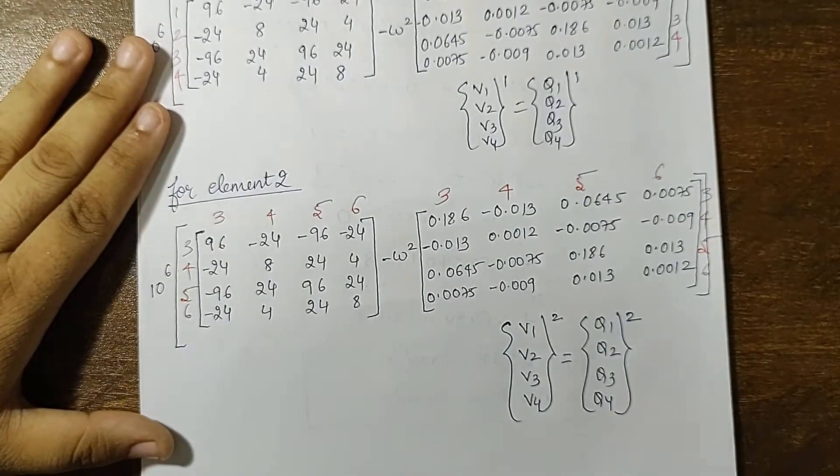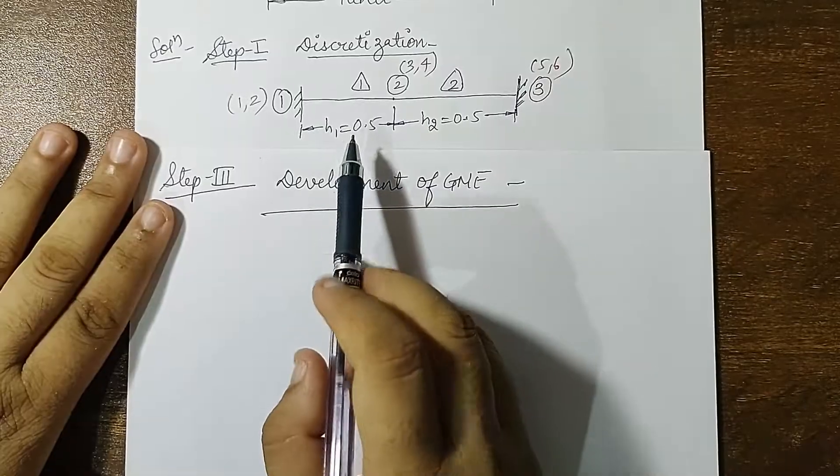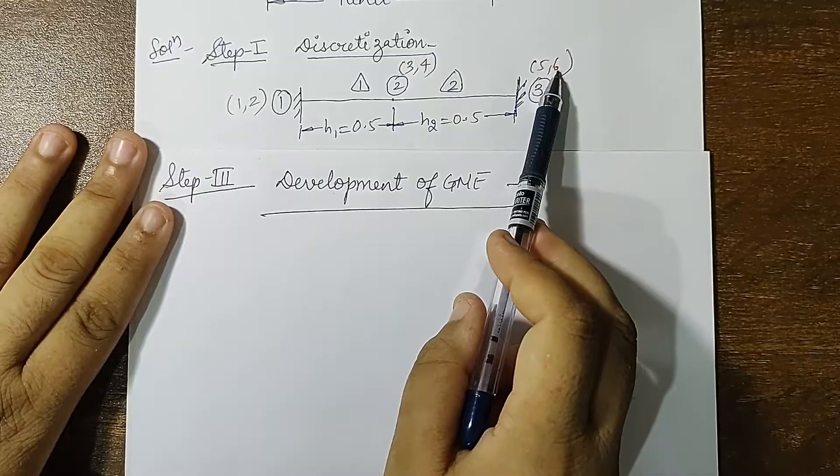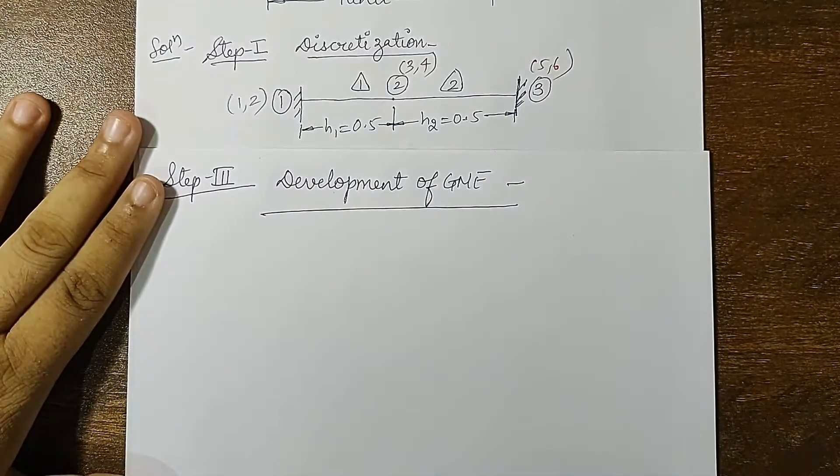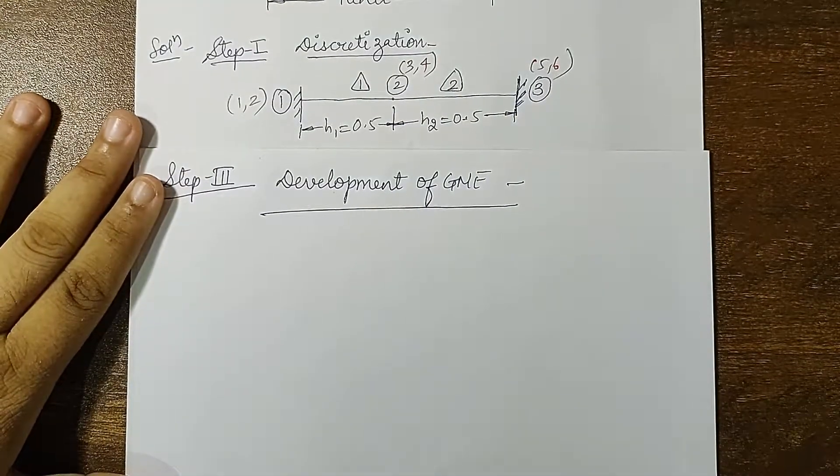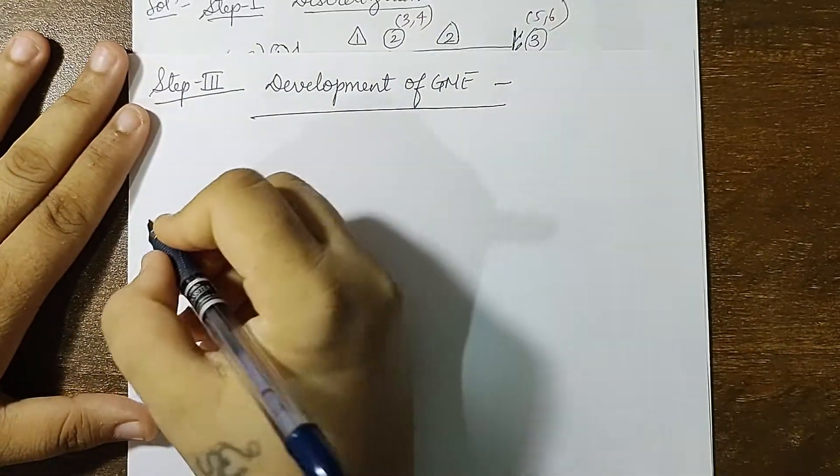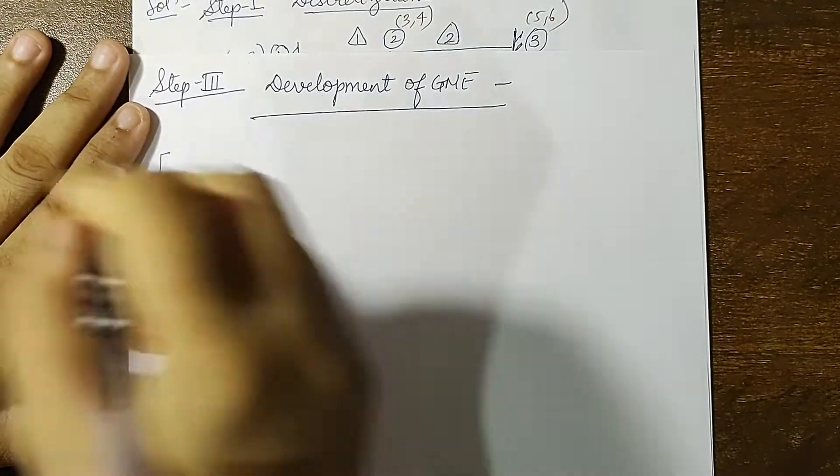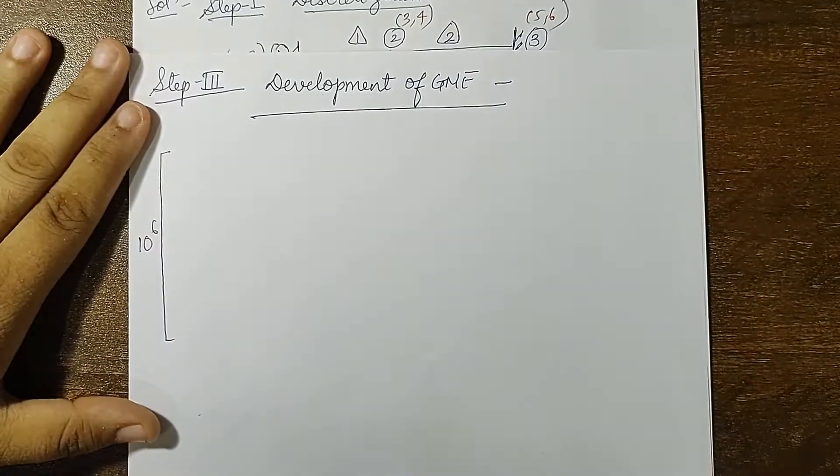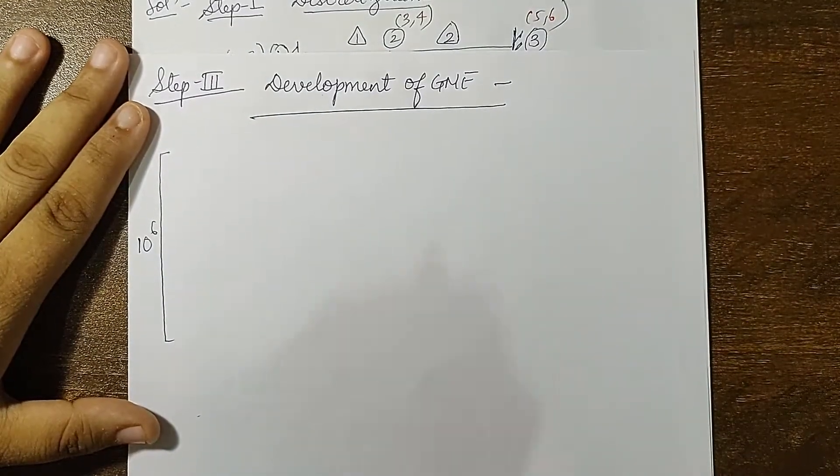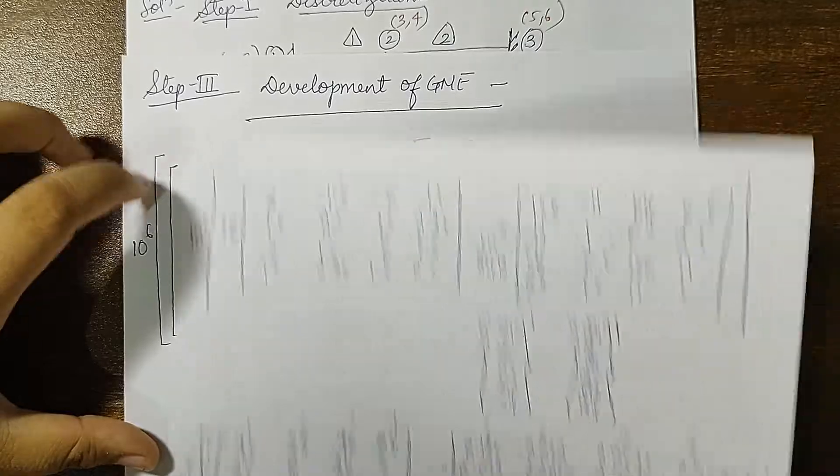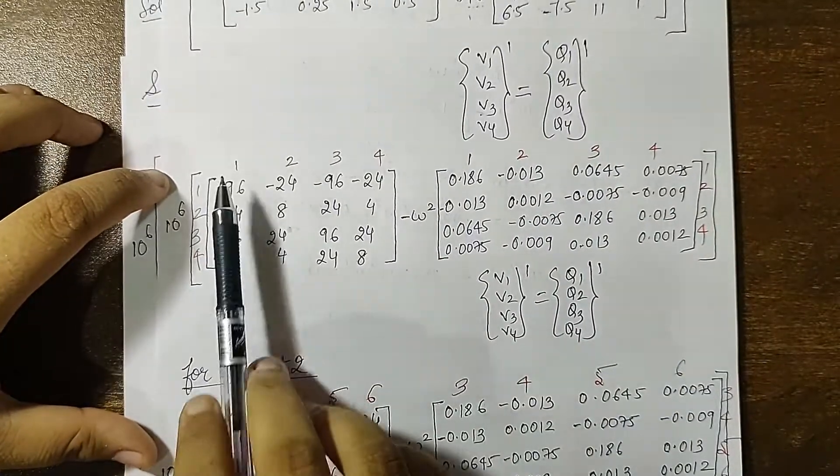Next step 3 is my development of GME. In the discretization diagram, there are total 6 degrees of freedom. So my order of GME will be 6 by 6 matrix. Now from the EME, I note that there is 10 raised to 6 common. Each matrix will be a 6 by 6 matrix, so be very careful while forming it. Now this which you will see is the first one.